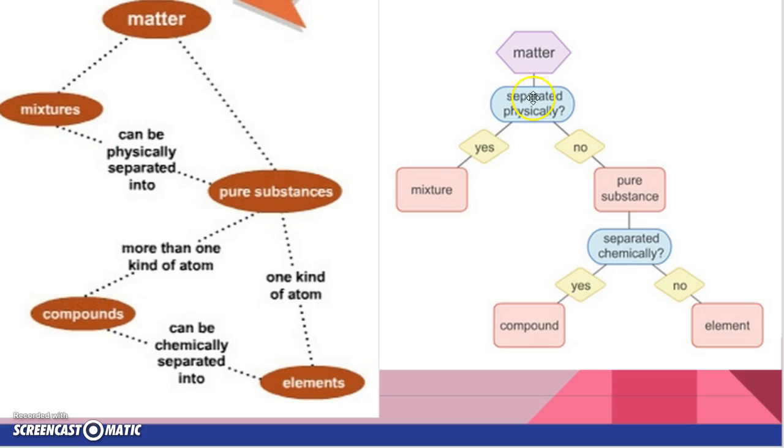So here's the diagrams that we started with. Hopefully now they make more sense. Feel free to copy down which ones you feel will help you. Matter can be divided into mixtures and pure substances. Mixtures can be separated physically into the pure substances.